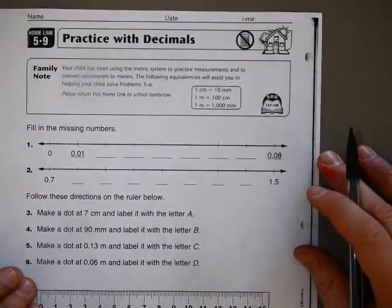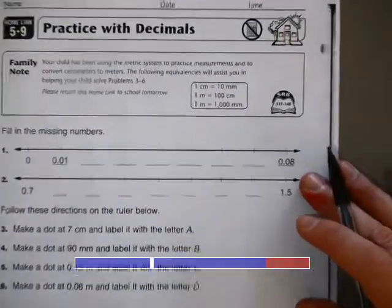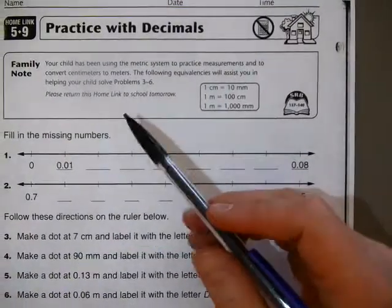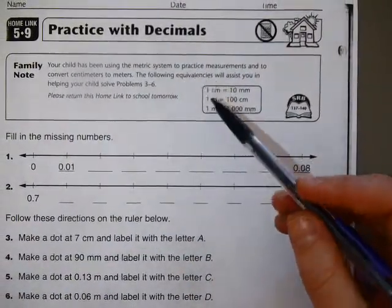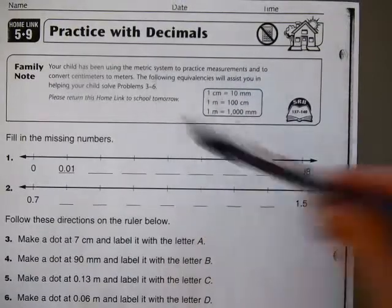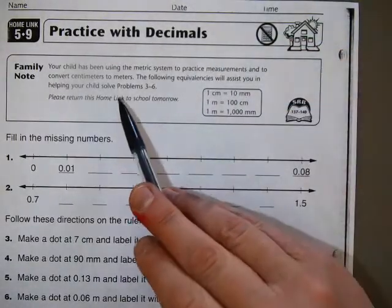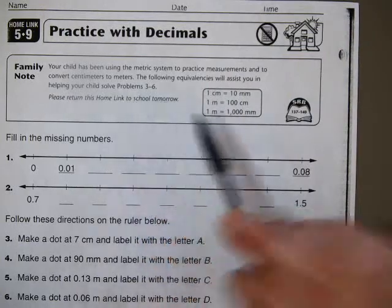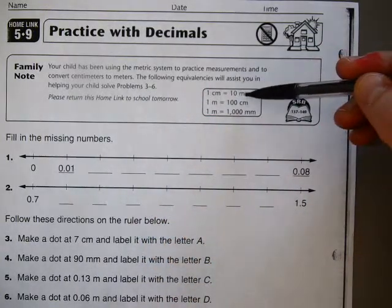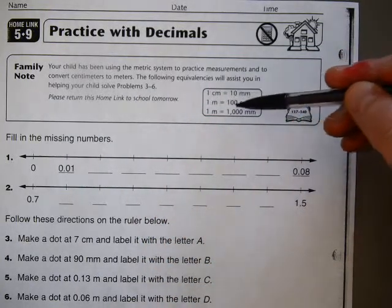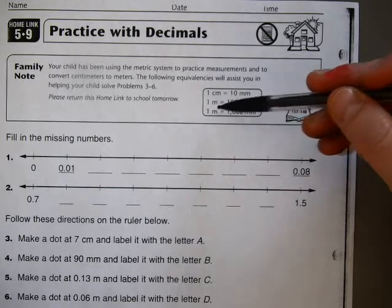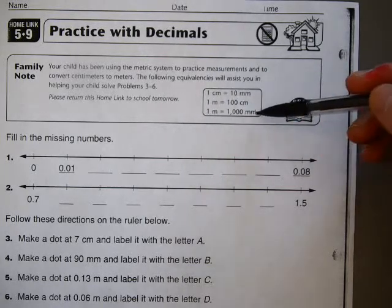This is Homelink 5.9 of Everyday Math, Practice with Decimals. Your child has been using the metric system to practice measurements and to convert centimeters to meters. The following equivalencies will assist you in helping your child solve problems 3 through 6: 1 centimeter equals 10 millimeters, 1 meter equals 100 centimeters, and 1 meter equals 1,000 millimeters.